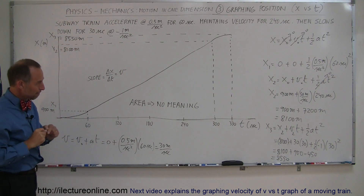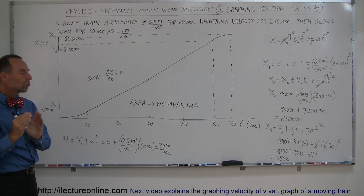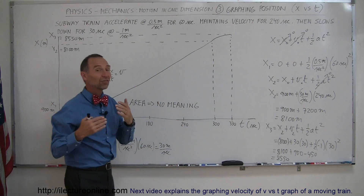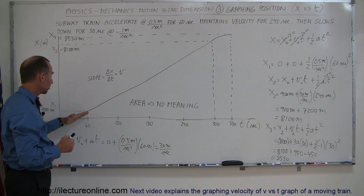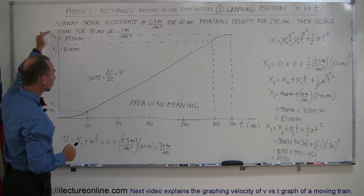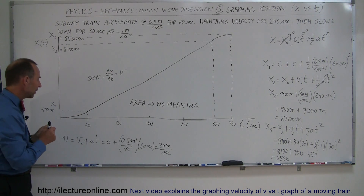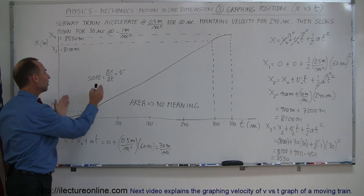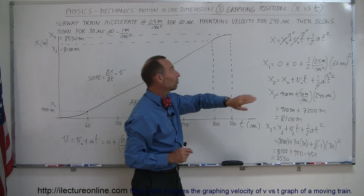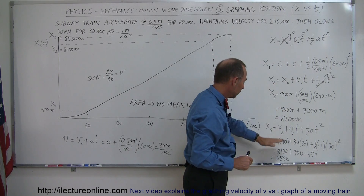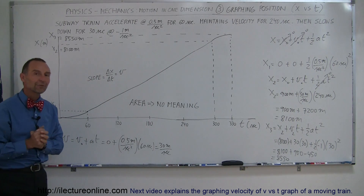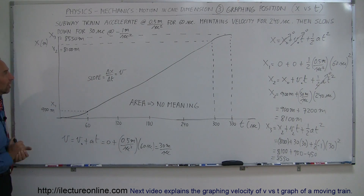In short, we first graphed the motion: an acceleration phase, a constant speed phase, and a deceleration phase. That is what an x versus t graph looks like for an object that starts from rest, accelerates, holds its speed, then decelerates back to zero. Then, to find how far the object traveled in each of the three segments — the acceleration segment, the constant velocity segment, and the deceleration segment — we used the equations of motion to find the distance traveled in each segment and added them up to find that the train traveled 8,550 meters total by the time it reached the next station.